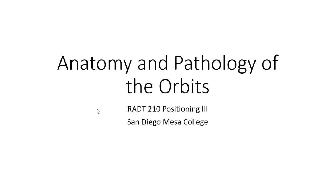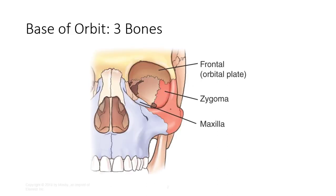In this presentation, we'll be covering the basic anatomy of the orbits in preparation for radiographic examination. The bases of the orbits are composed of three bones: the frontal bone, which is most superior and makes up the orbital plate; the zygoma laterally; and the maxilla inferiorly.